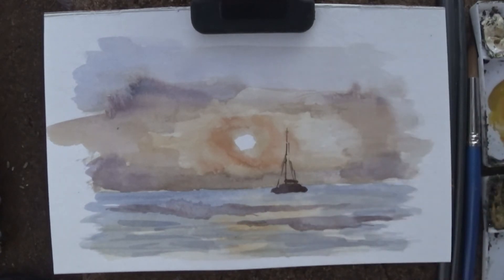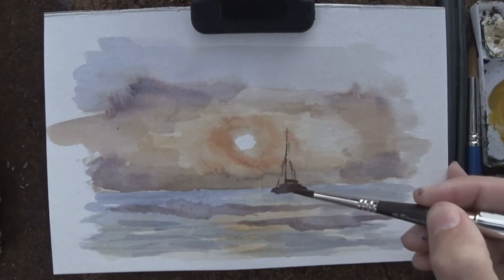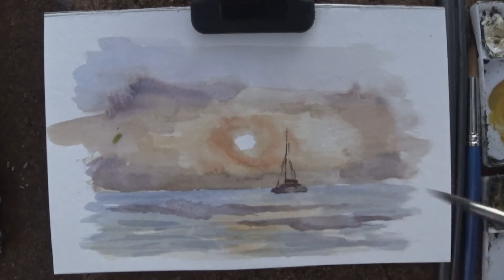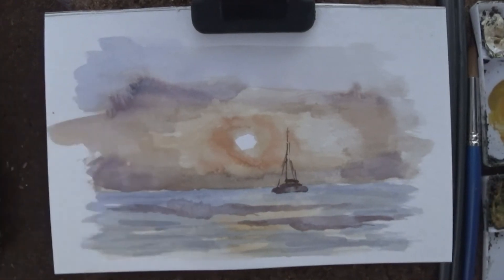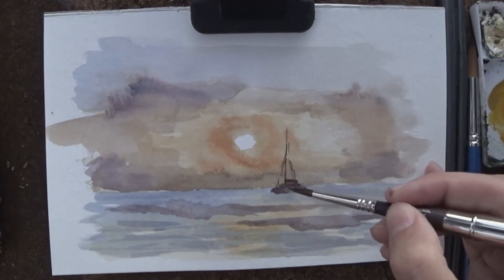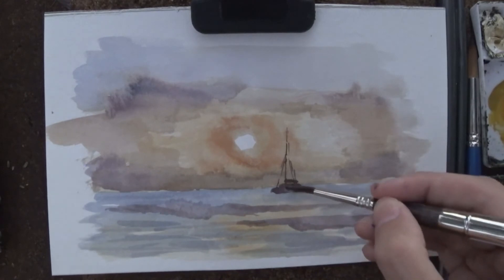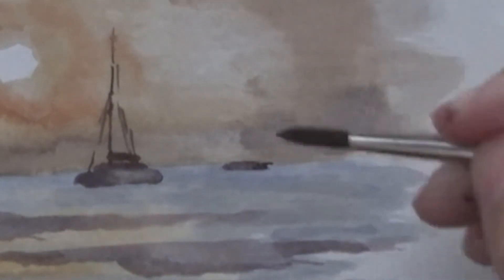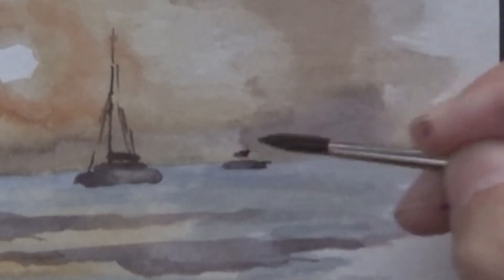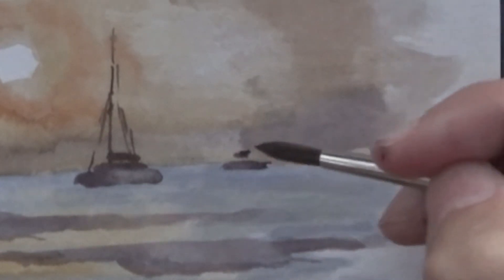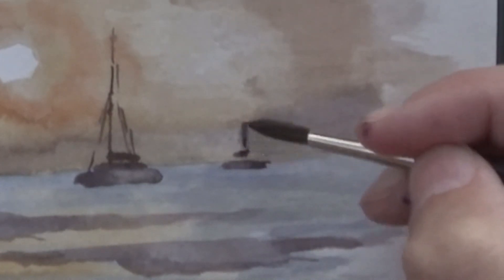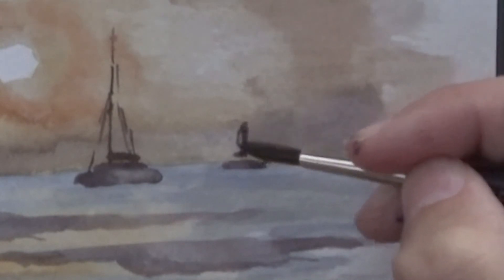The viewer's brain, you looking at this, automatically knows that's a boat on the water. Just because we know what boats are, I don't have to put in every single detail for you to understand that. There's some reflected light on the back of the boat there, so I was just lifting off some of that dark color. That gives it more of a 3D effect, showing some different planes, the back of the boat versus the side of the boat, things of that nature.